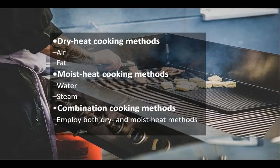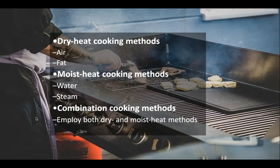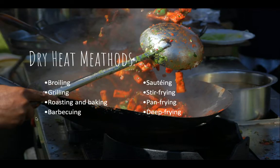Dry heat methods use air or fat to transfer heat; moist cooking methods rely on water and steam; and combination methods employ both. Deep frying is actually a dry heat method — even though you're submerging food in what appears to be liquid, the surface of the food is actually dehydrating, as the bubbles coming off are liquid evaporating, which is what makes food crispy. Dry heat methods include broiling, grilling, roasting, baking, barbecuing, sauteing, stir frying, pan frying, and deep frying.